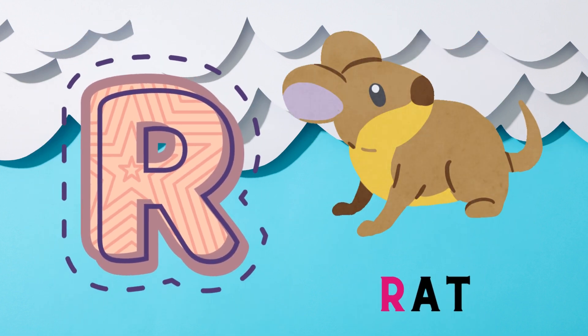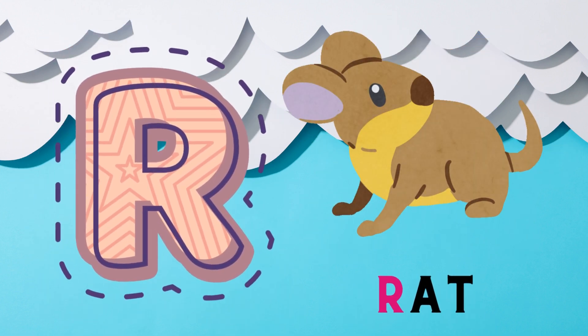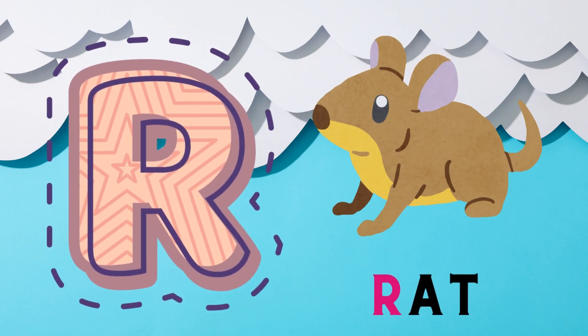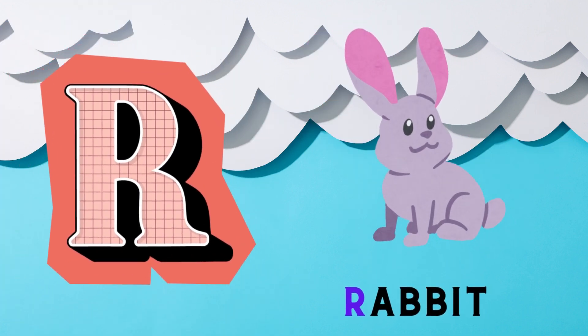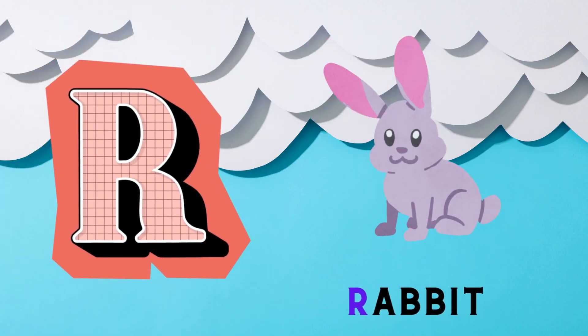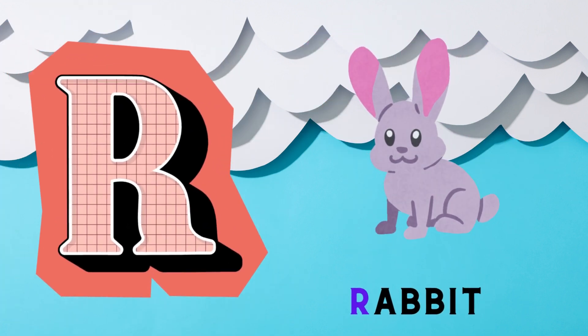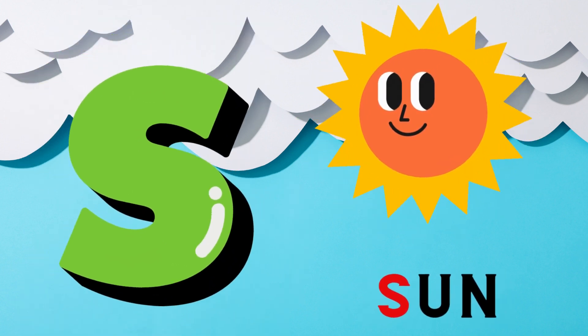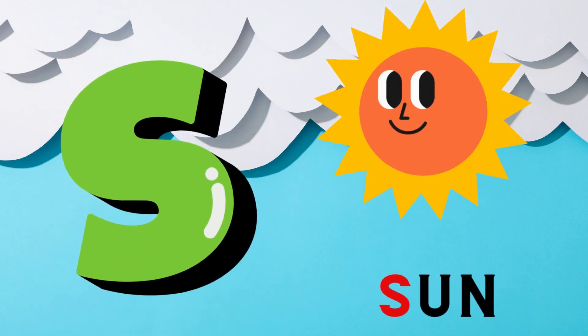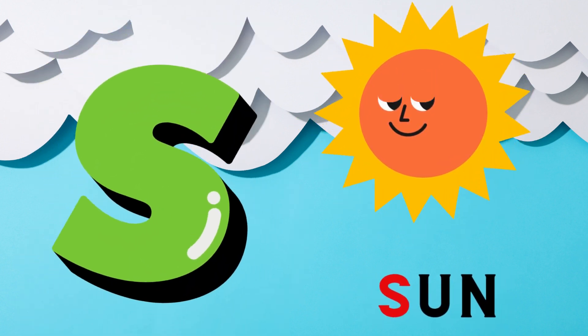R is for Rat. R, R, Rat. R is for Rabbit. R, R, Rabbit. S is for Sun. S, S, S, Sun.